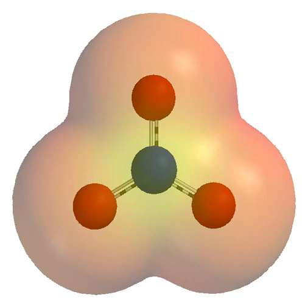An anion, from the Greek word anio meaning up, is an ion with more electrons than protons, giving it a net negative charge since electrons are negatively charged and protons are positively charged. A cation, from the Greek word kato meaning down, is an ion with fewer electrons than protons, giving it a positive charge.